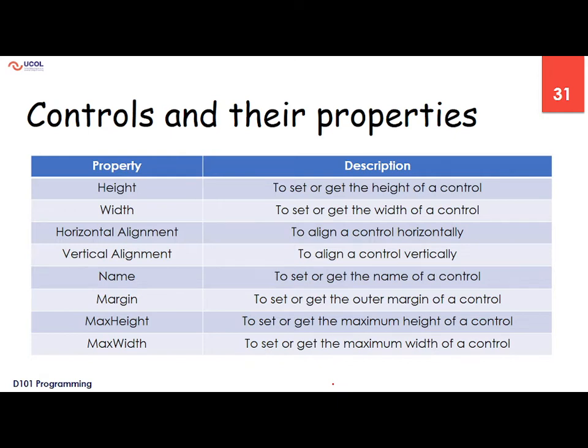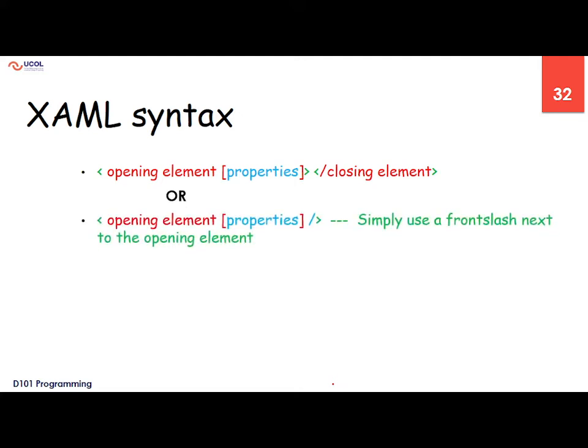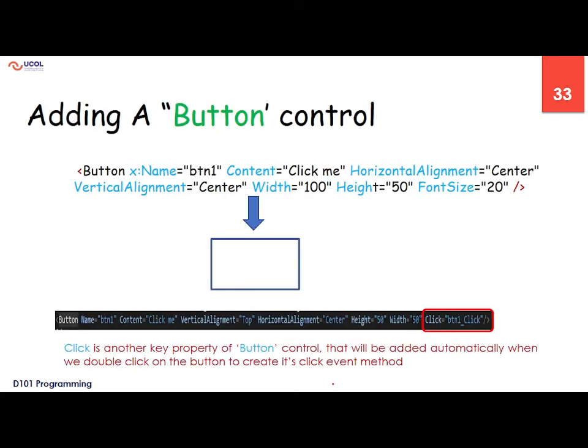In XAML we have opening and closing tags, but sometimes we don't need both — we can use self-closing tags. For example, a button can be self-closing: instead of opening tag and closing tag, we just put a slash before the angle bracket. So we don't need a closing tag — that's a self-closing tag. This is another way to write XAML elements.